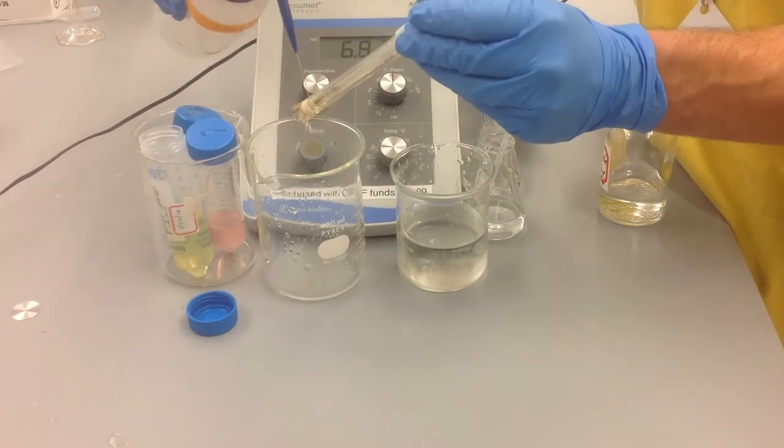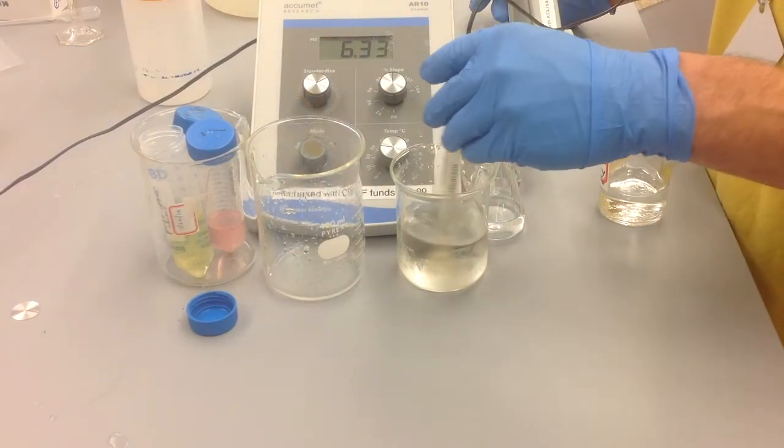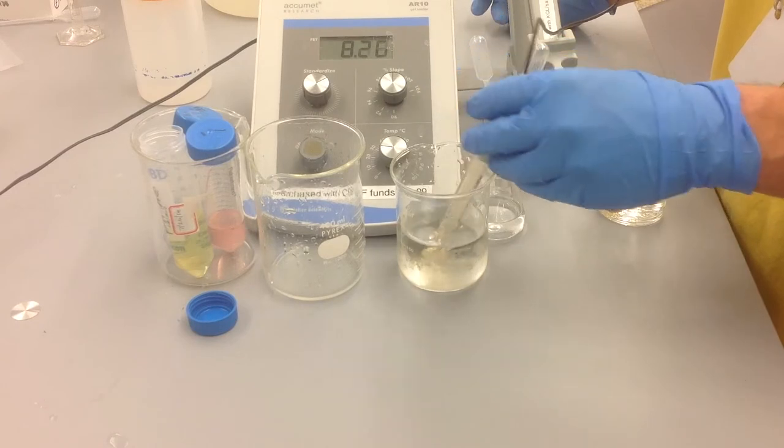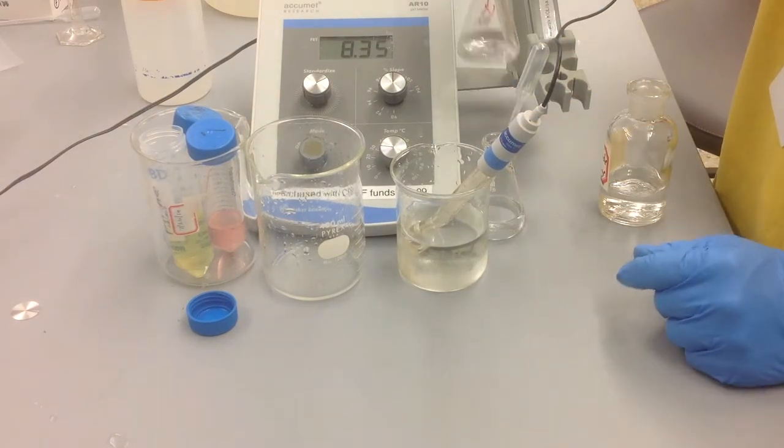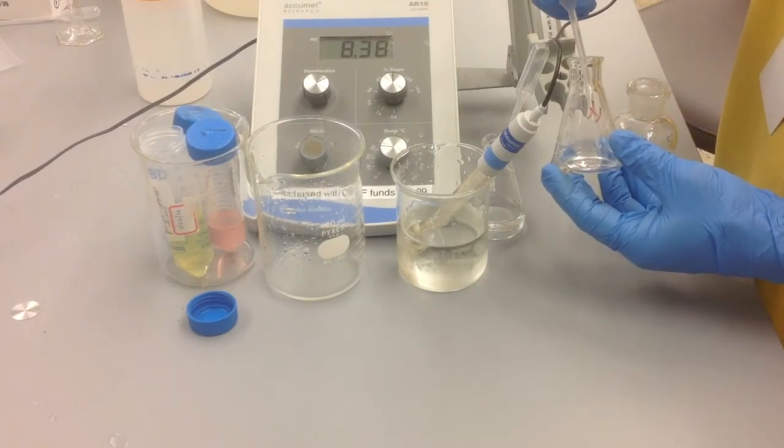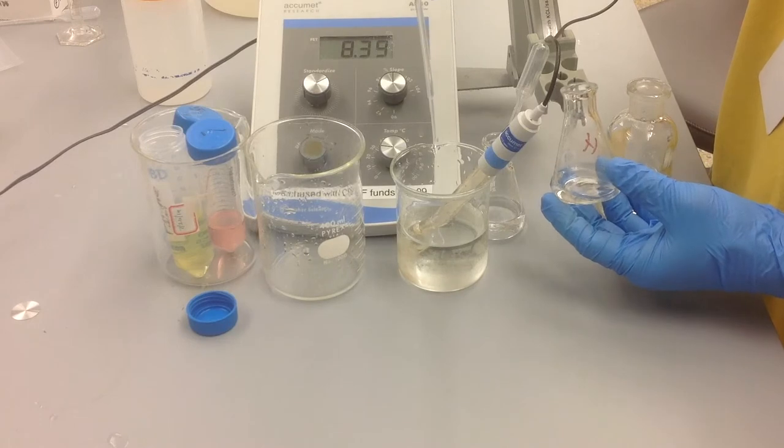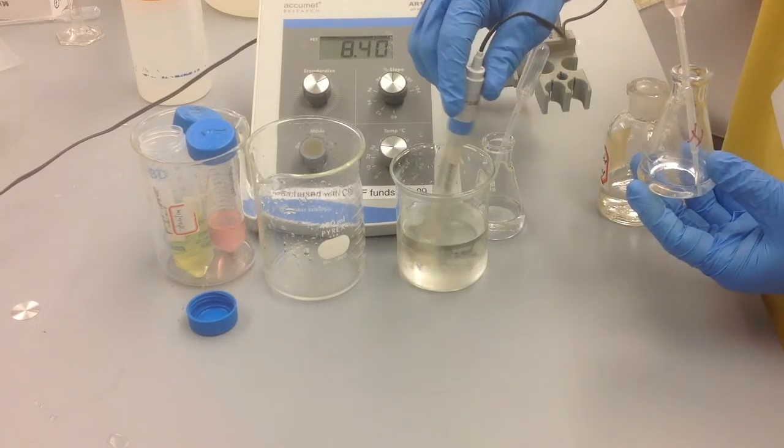Once you've finished calibrating, go ahead and check the pH of your solution. We're targeting a pH of 7. To lower the pH, add a strong acid such as HCl. Be sure to stir the solution after each addition of acid or base.